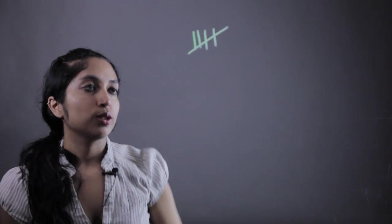So, tally marks, as some of us know, is when you have one, two, three, four, and the fifth one goes across.